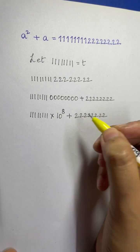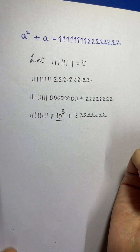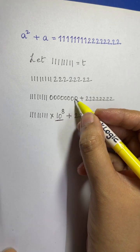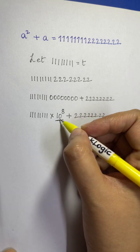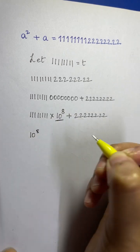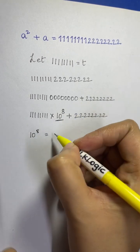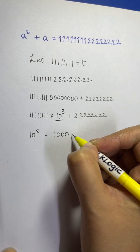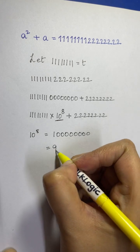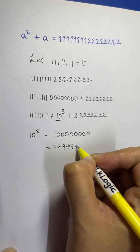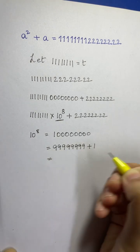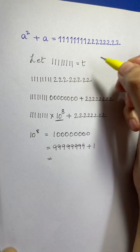This looks very ugly — how can we solve it? It's a very large number with eight zeros. So how can we write 10^8 in terms of t? As you know, 10^8 has eight zeros, and it can be written as 99999999 plus 1, which is 9t plus 1, since 11111111 equals t.